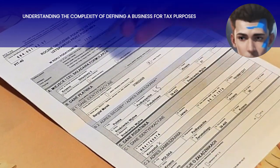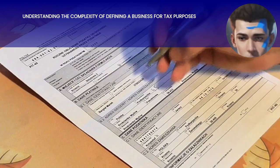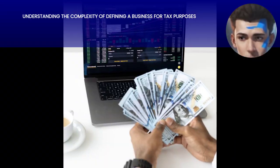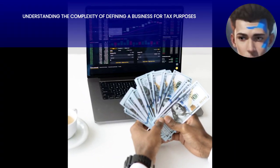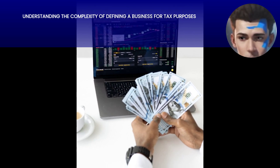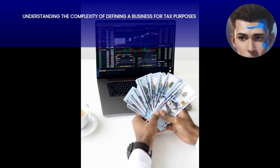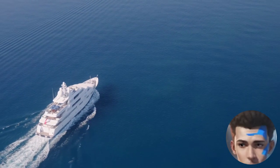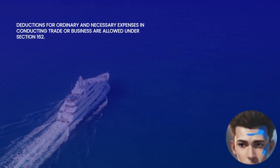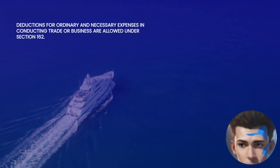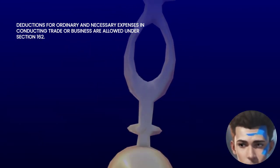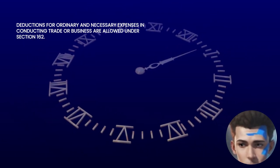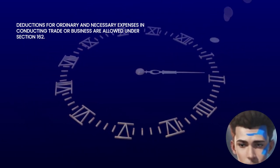Here's how the law for the IRC explains what a business is: the Internal Revenue Code (IRC) doesn't provide a single, clear-cut definition of what constitutes a business for tax purposes. Section 162 allows deductions for all the ordinary and necessary expenses paid or incurred during the tax year in carrying on any trade or business.